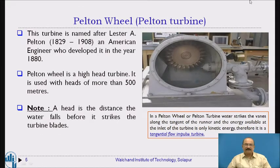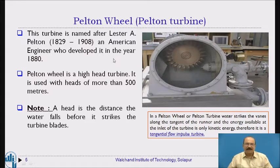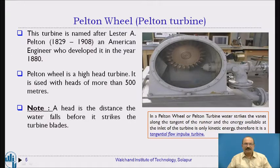Pelton wheel turbine — here the actual Pelton wheel photograph is given. The turbine name is based on Pelton, an American engineer who developed it in the year 1880. The Pelton wheel is a high head turbine. High head means the available head is more than 500 meters. Depending upon the available head, we use different types of turbines.